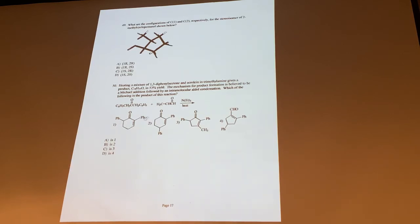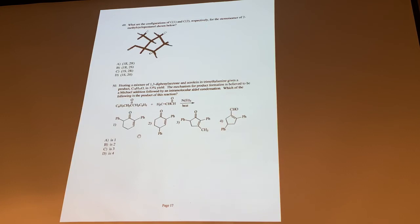Here's an example of Robinson annulation: the answer is compound one. You have the aldol condensation here and the conjugate addition there. It's Robinson because it's a conjugate Michael addition followed by an aldol. A little tricky to see. They show you the products and how things can arise.